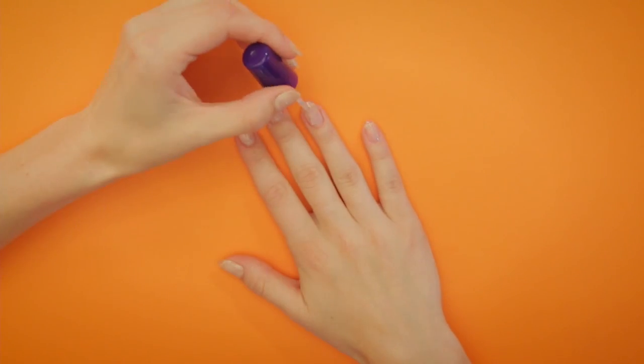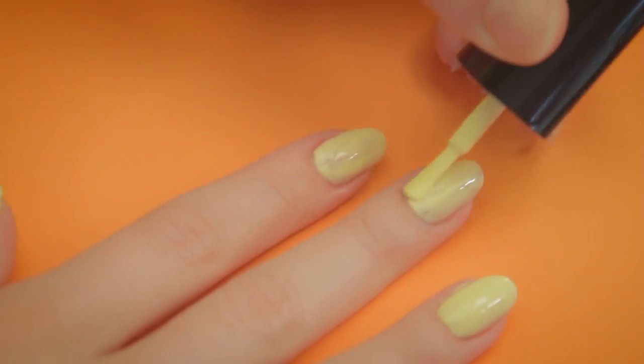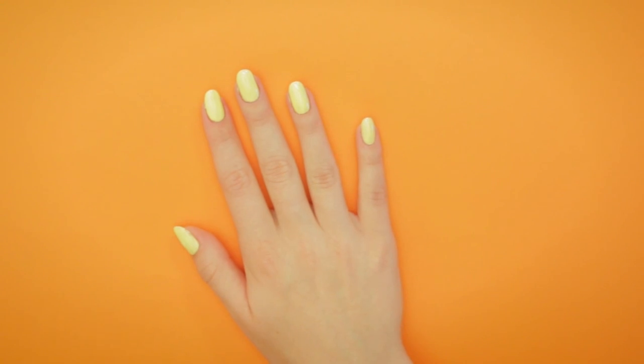First, apply your base coat. Then all nails get painted yellow. Don't forget two coats.